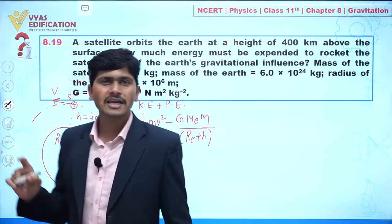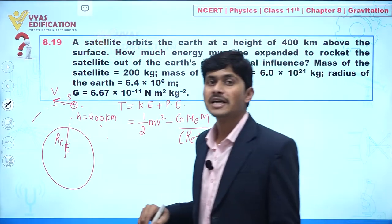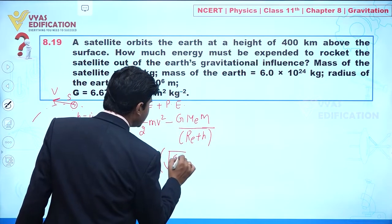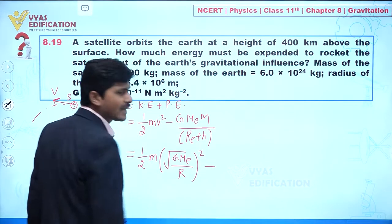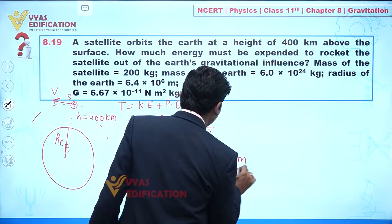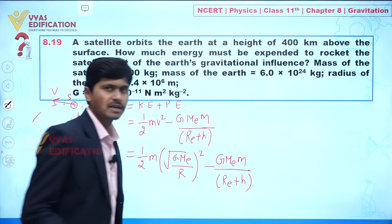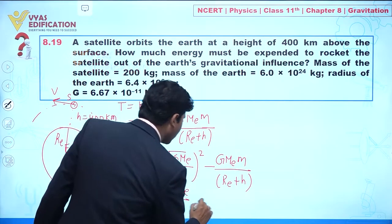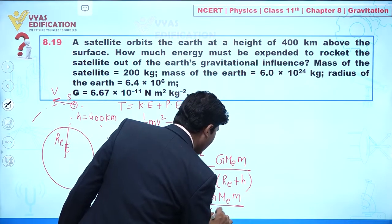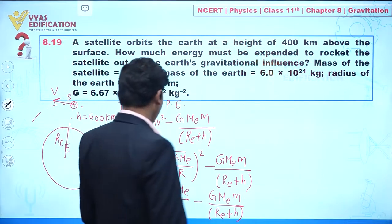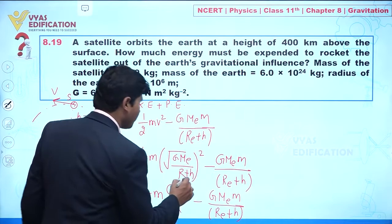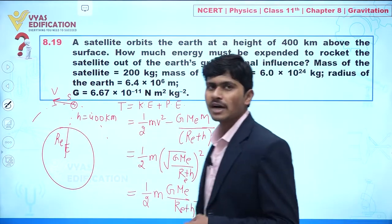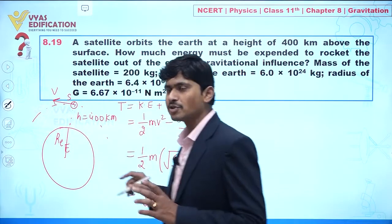When the satellite is revolving around Earth, its orbital velocity is given by the square root of G·Me divided by r, where r is the distance from the center of Earth to the satellite position, which is Re plus h. Substituting this orbital velocity, kinetic energy becomes half·m·G·Me divided by (Re + h).